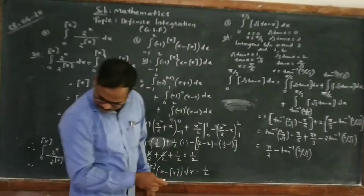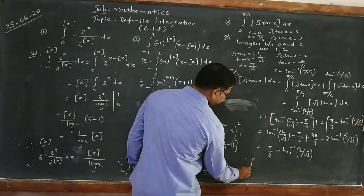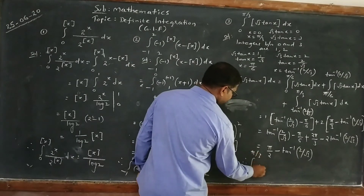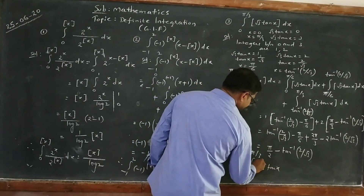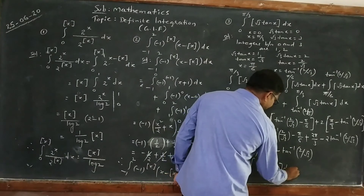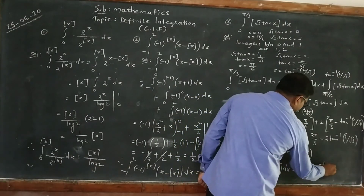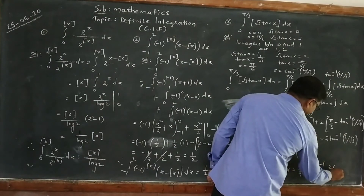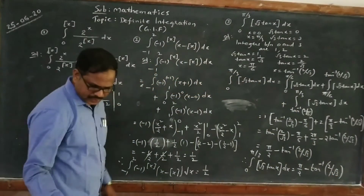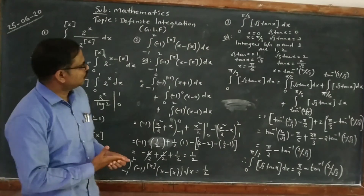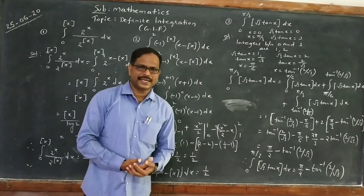That is the end of the solution. Therefore, the integral from 0 to π/3 of [√3 tan x] dx equals π/2 minus tan⁻¹(2/√3). Hope it is clear. We will continue with more problems in the next class. Thank you.